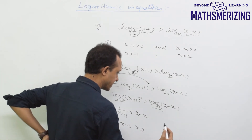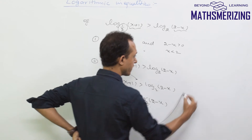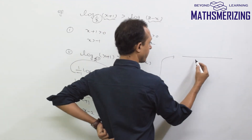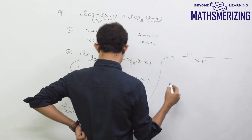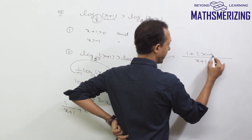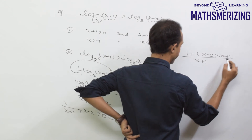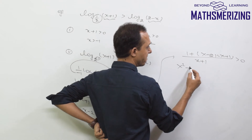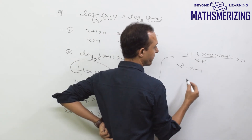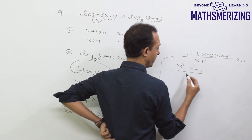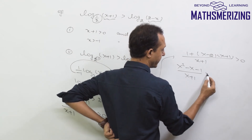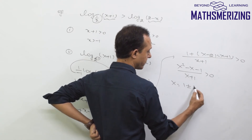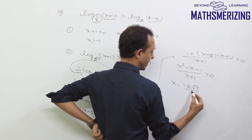Rationalizing by taking the common denominator (x+1), I get: 1 plus (x-2)(x+1) all over (x+1), which is greater than 0. Expanding gives x squared minus x minus 1 upon (x+1) is greater than 0.